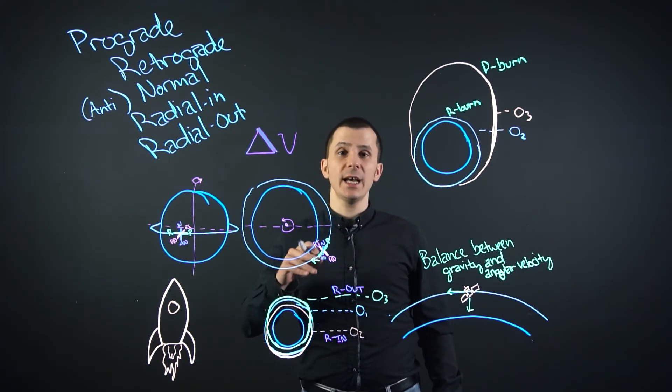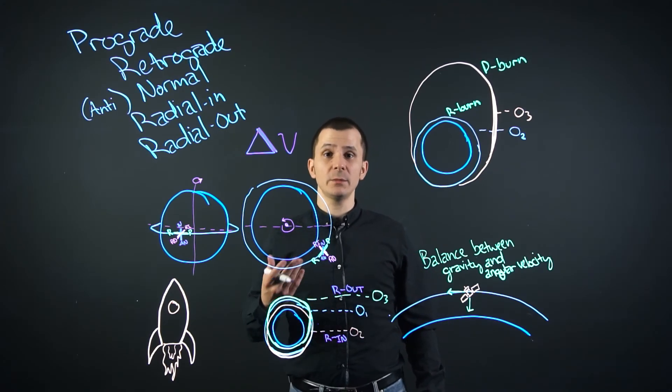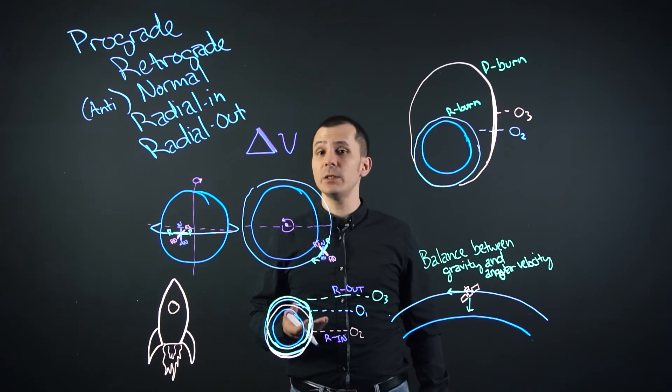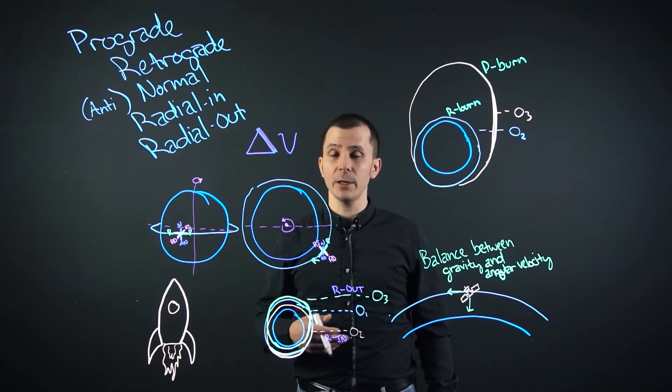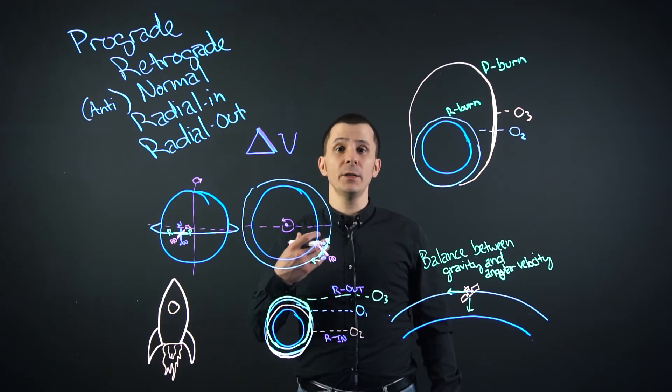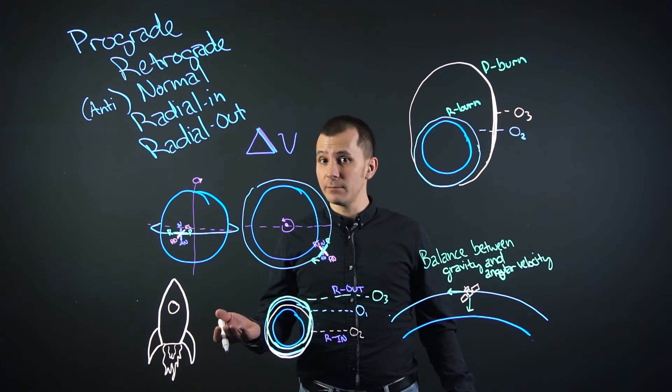Delta v is how much velocity - the change in velocity - that you can get from the spacecraft's engines as well as its fuel. And as the fuel is depleted, the vehicle becomes lighter, therefore requiring less thrust to move it, or it goes faster the lighter it is. It's quite interesting.